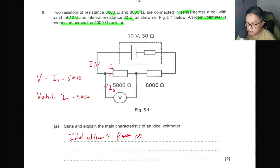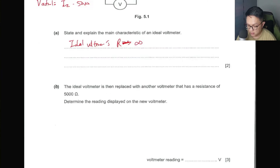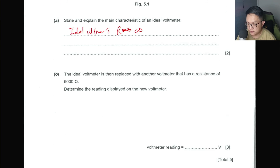It's important for a voltmeter to have a very large resistance tending to infinity. How large is 'large'? It should be a few orders of magnitude bigger than the other resistors in the circuit — perhaps in the range of 100 kΩ or more. Then the ideal voltmeter is replaced with one that has a resistance of 5000 Ω.